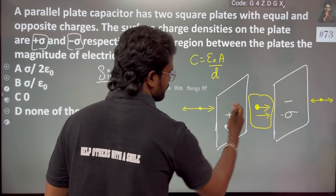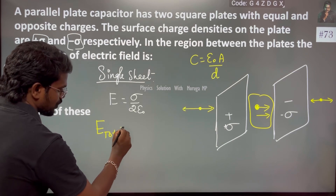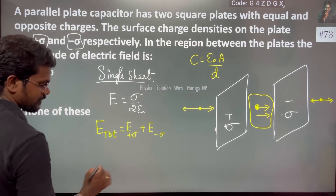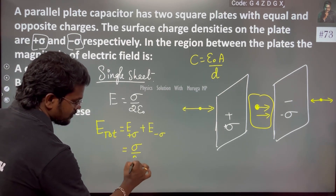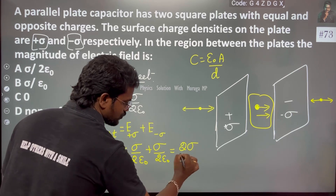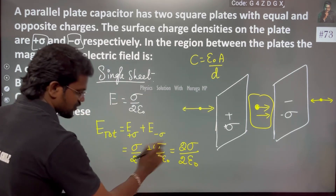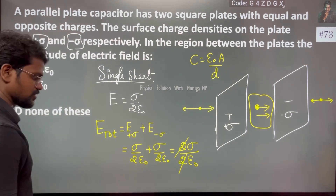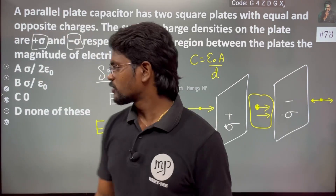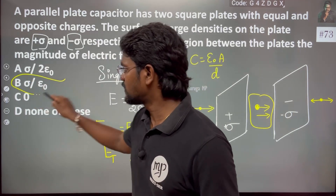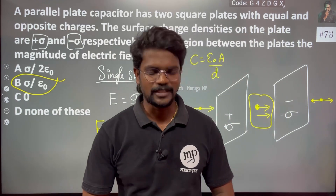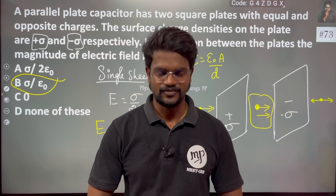The electric field between the two plates — E total — is equal to the field from the positive plate plus the field from the negative plate. This is sigma over 2 epsilon-naught plus sigma over 2 epsilon-naught, which equals 2 sigma over 2 epsilon-naught. The 2s cancel each other, so the electric field in between the plates is sigma by epsilon-naught. So the correct option is option B. Thank you.